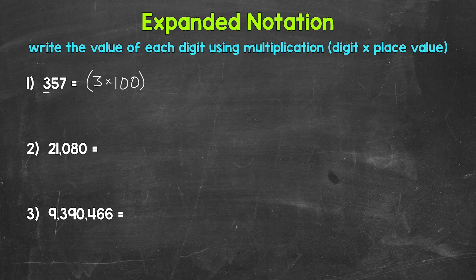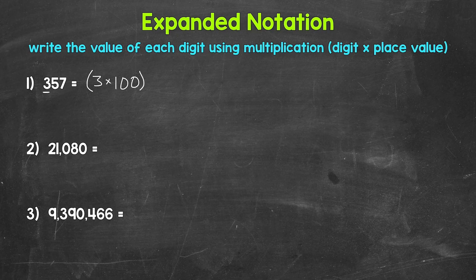And then we can close the parentheses. This 3 has a value of 3 hundreds, 3 groups of 100, which is 300. So we have 3 times 100. Plus — and we put an addition sign here because we want the sum of all of the values. We are adding the values of each digit when writing a number in expanded notation, so we use addition in between. The sum of all of the values will equal the original number.